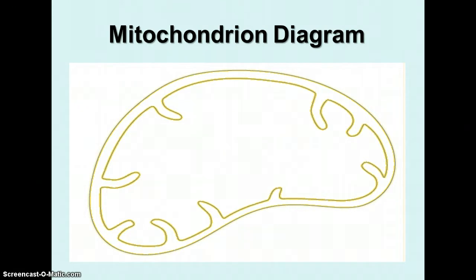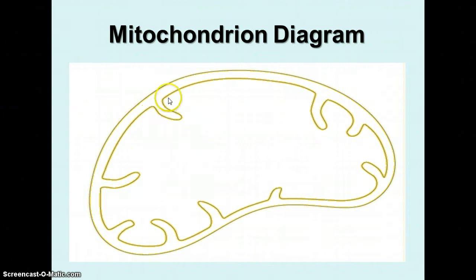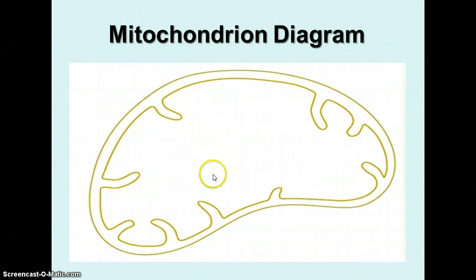You need to label the diagram. You need to label the outer membrane, the inner membrane, the cristae — which are the folds — the inter-membrane space, and the matrix of the mitochondrion. You can use your book, page 63, to help you label the mitochondrion diagram.